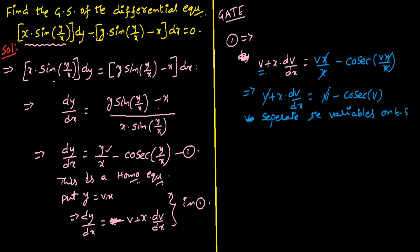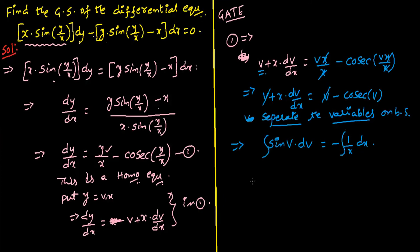Separating variables: sine(v) dv equals minus (1/x) dx. Integrating both sides: the integral of sine(v) is minus cos(v), so we get minus cos(v) equals minus log x plus constant, giving cos(v) equals log x plus c.